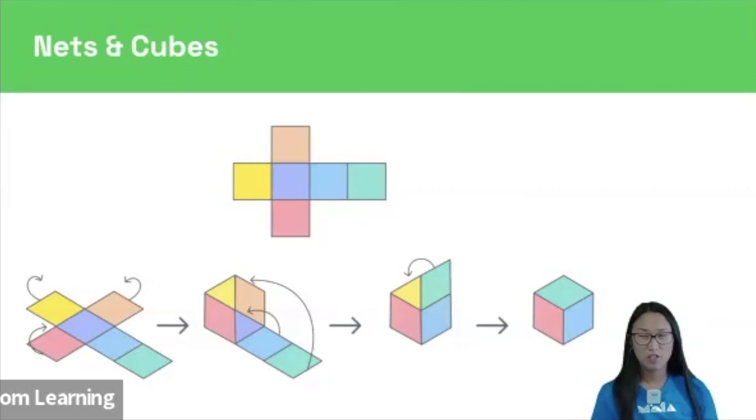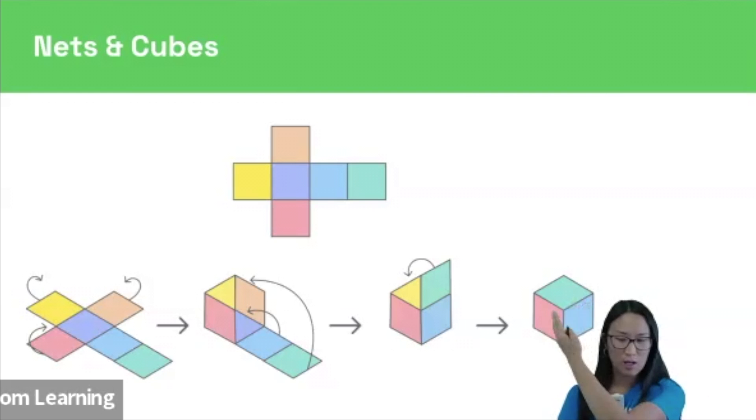Another key piece of terminology is a face, not this face, but the face of a 3D shape. So a cube has six faces. You can only see three of them here, but that's a face.